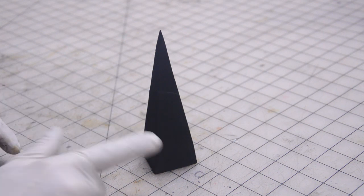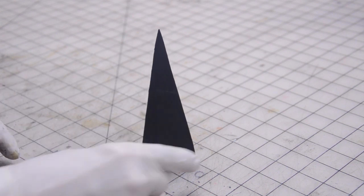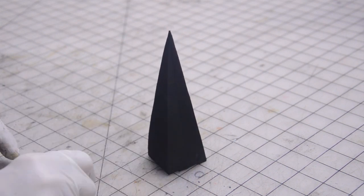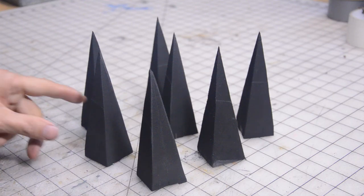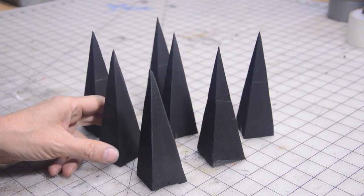For the pauldron I'm making, it turns out I need nine more of these, so I've got to do this nine more times. Wash, rinse, and repeat. There they are, the foam spikes, all cut and ready to go.